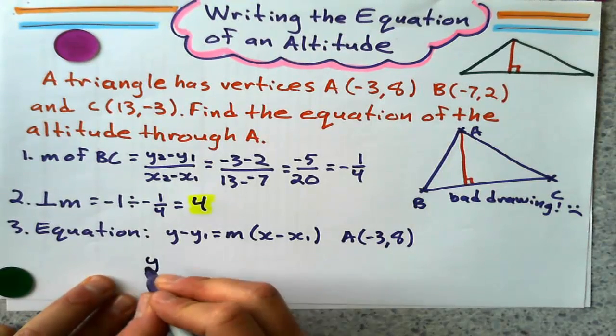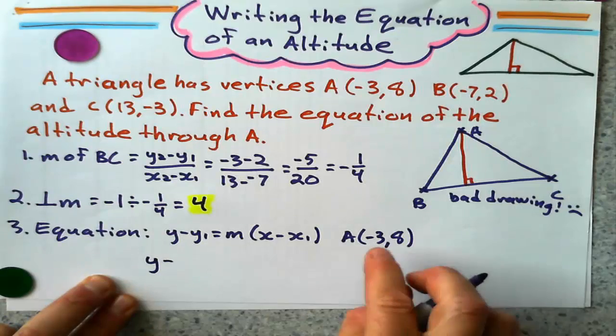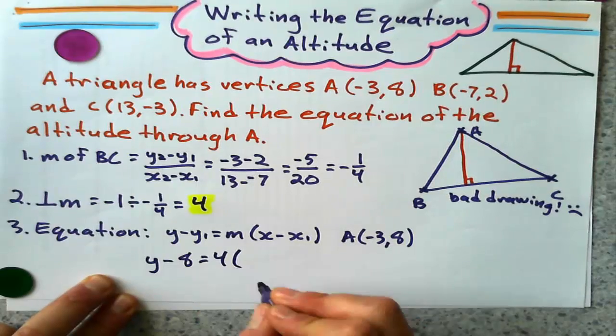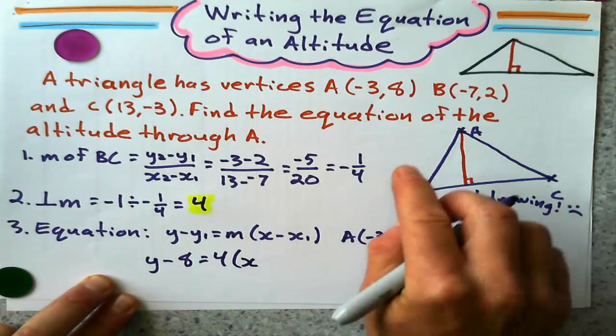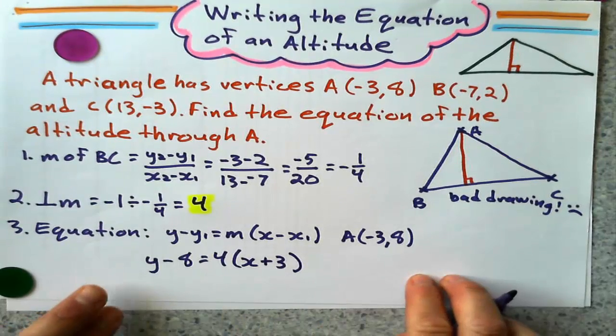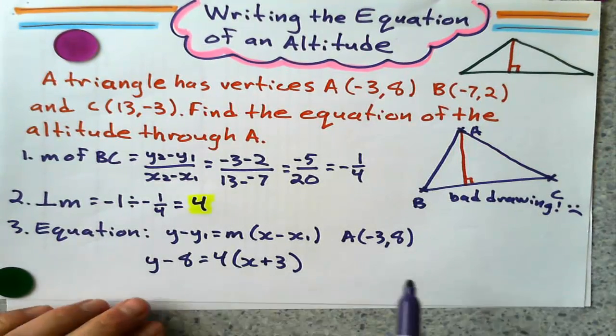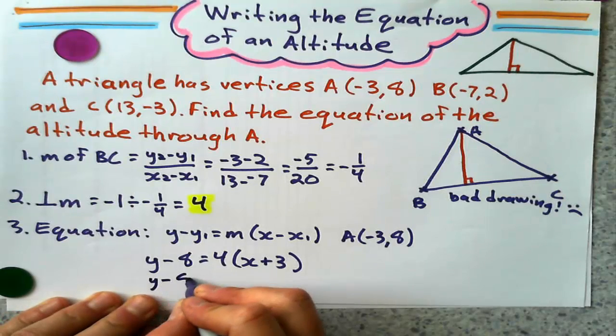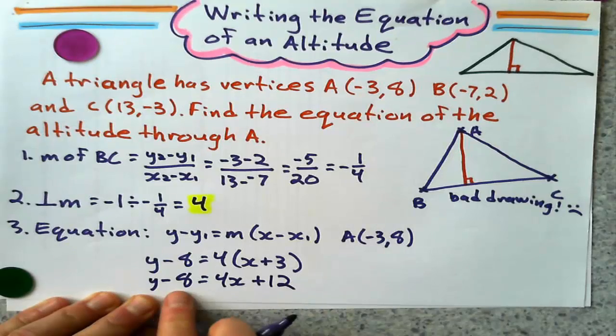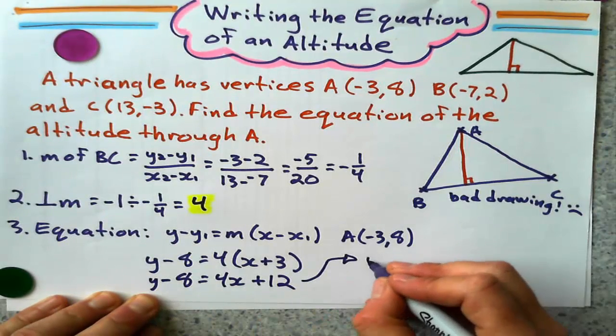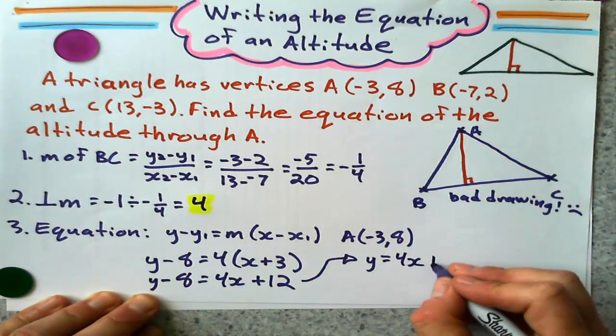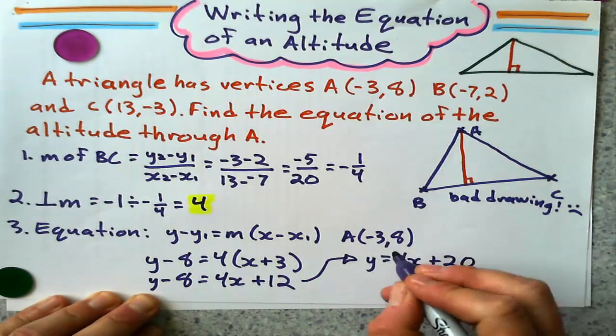So that's Y minus 8 equals 4 times X minus a negative 3 is just plus 3. And now I do my thing where I expand that 4 through. 4X plus 12 and add that 8 to the other side to get Y equals 4X plus 20.